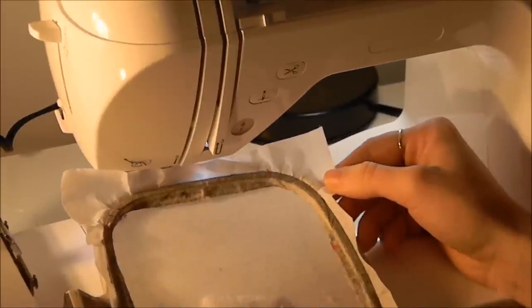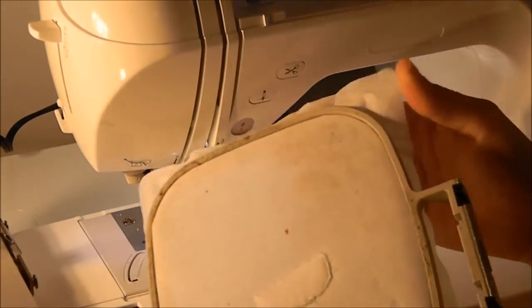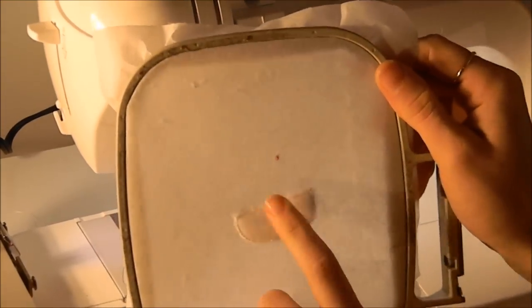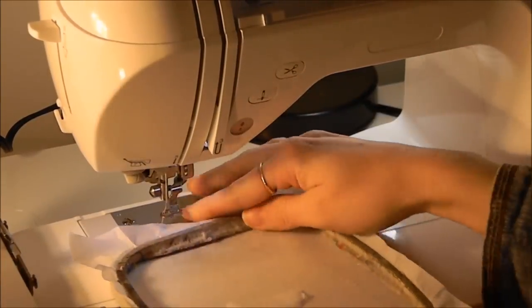I've done the tack down stitch, and I've cut out the fleece on both sides around the tack down stitch. I've done both sides cut as close to the stitching as possible.